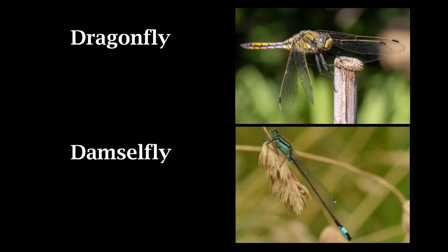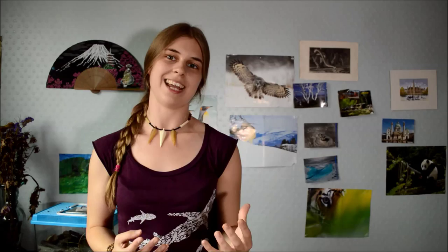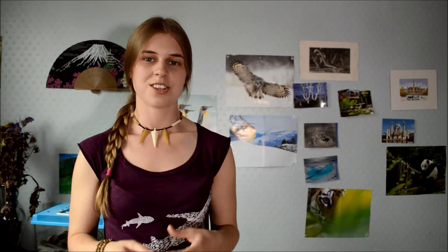The eyes are also a very good indicator of which one you're looking at. With dragonflies, the eyes are very large and positioned at the top of the head, and there's usually part of the eye that's touching. With damselflies, the eyes are positioned at the side of the head, they're never touching, and are usually a lot smaller.